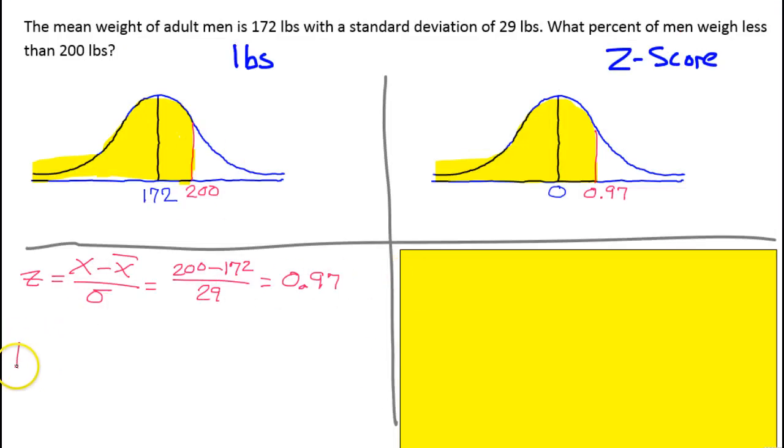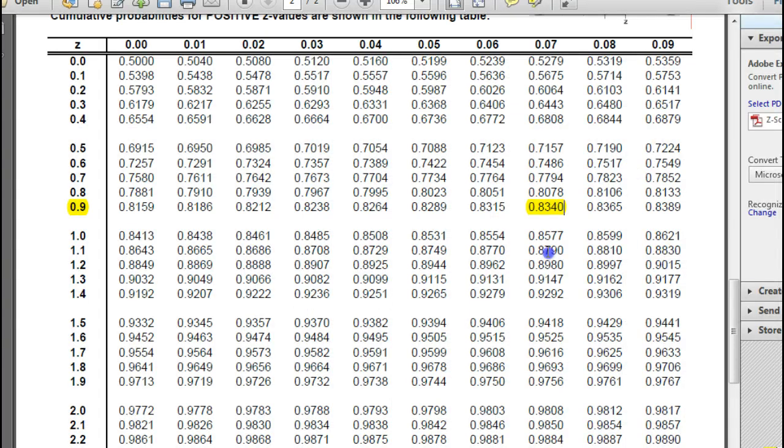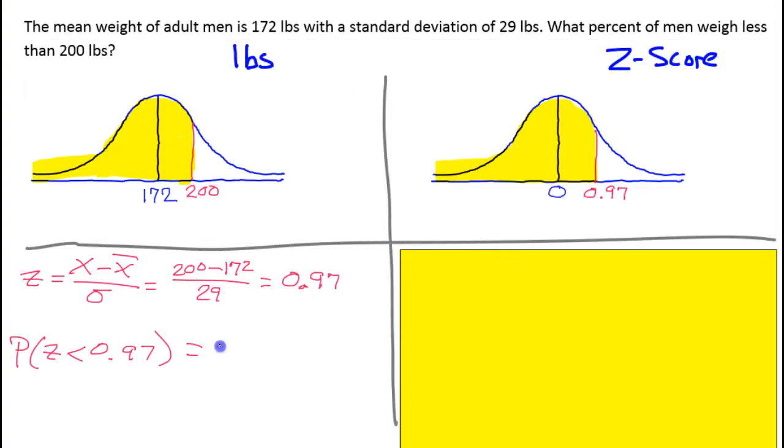That means the percentage of values less than 0.97 was 83.4%.